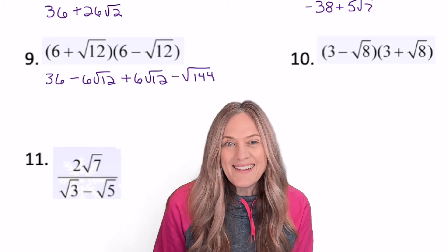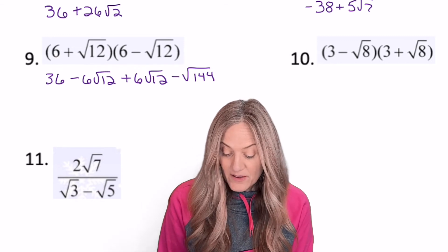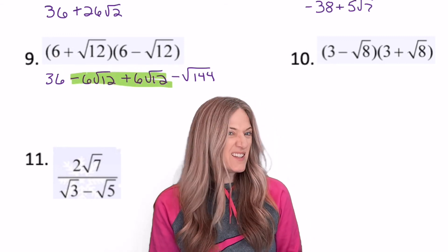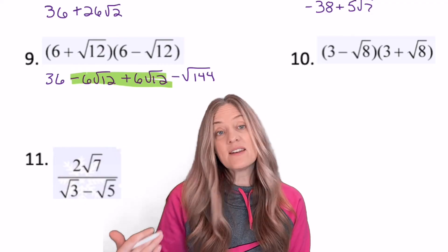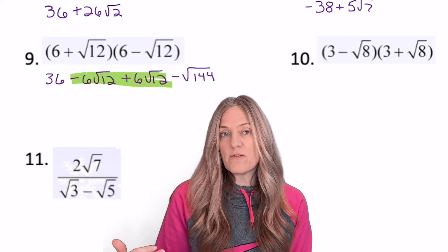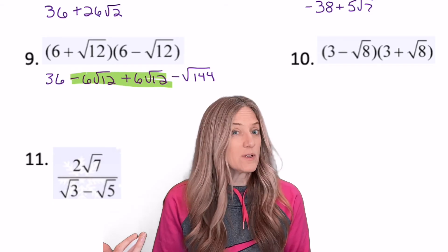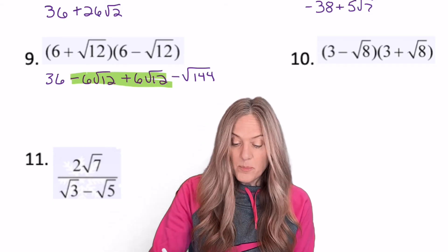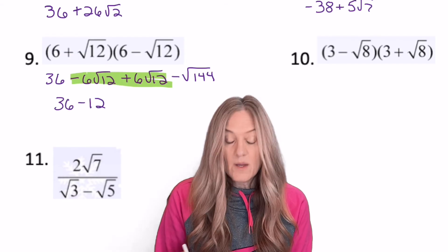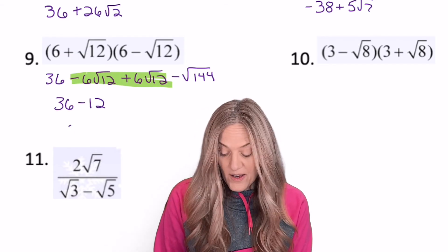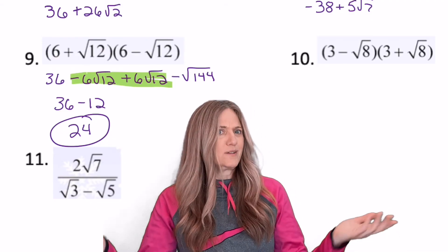As we multiply 9, look at what happens. The middle term adds out. Negative 6 root 12 plus 6 root 12. And the last term, negative root 144. Well, that's square root of 144 is 12. So I just end up with 36 minus 12. Which, of course, is 24. I end up with just a nice real number value. Done.